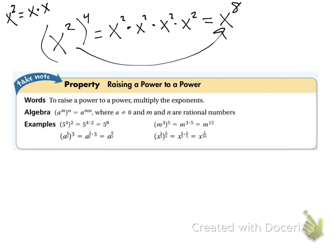If you look from here to here, there's a shortcut. When there's an exponent outside of parentheses, we need to multiply the exponents. So we multiply 2 times 4 to give us 8. So here's our general form: a to the m to the n is equal to a to the m times n.